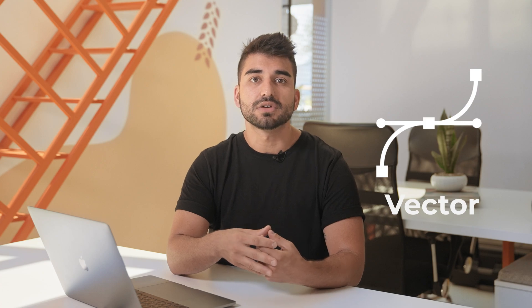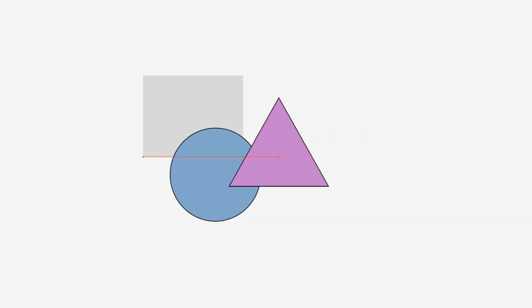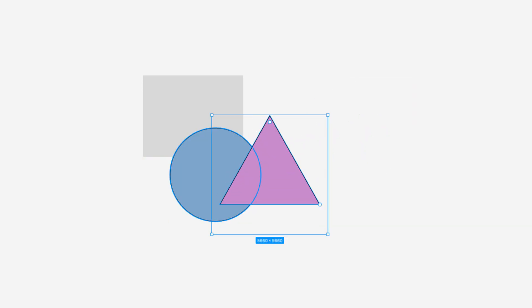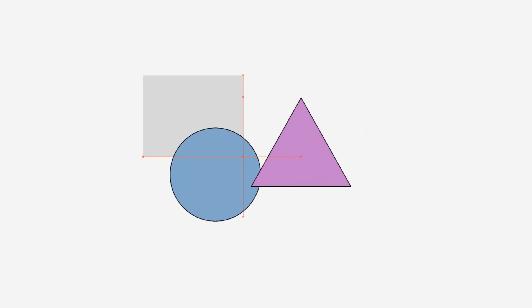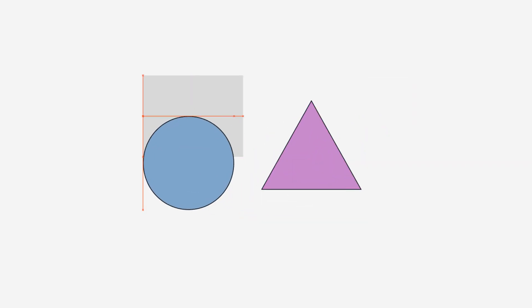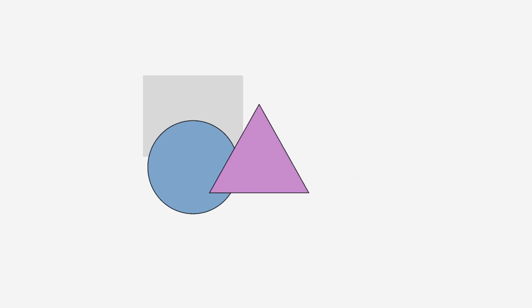Vector images are described by lines, shapes, and other graphic image components stored in a format that incorporates geometric formulas for rendering the image elements.